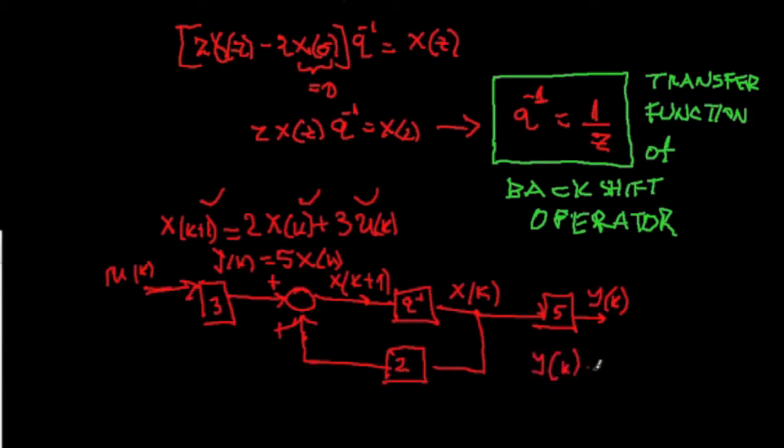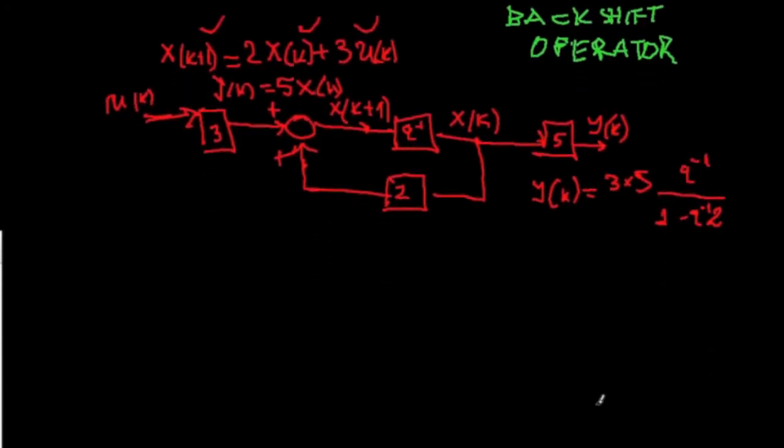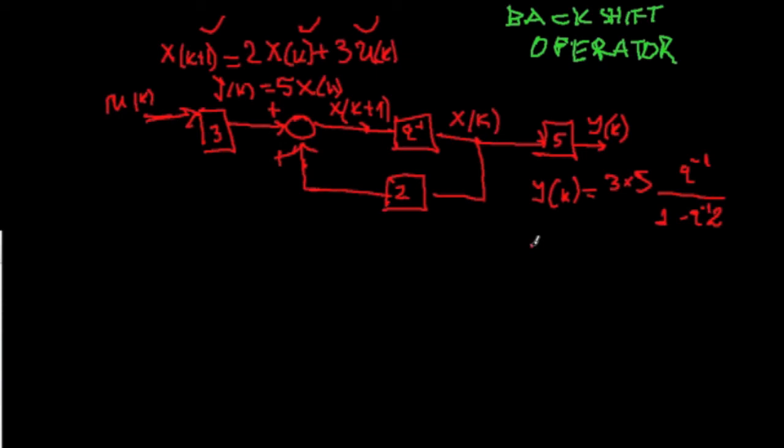And we know if we take a transfer function of this system just by looking at that, y(k) is going to be 3 multiplied by 5, and then we know all transfer functions in the main line here. So, q^(-1) and 1 minus q^(-1) multiplied by 2. In other words, if we look at this expression, we will get y(k) equals 15, and here we have a transfer function that is q^(-1) over 1 minus q^(-1) multiplied by 2.